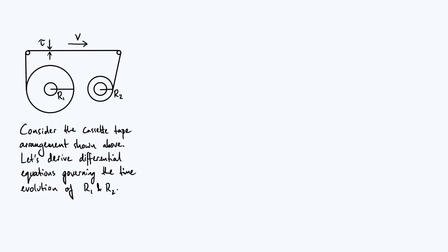Other than R1 and R2, the only parameters that are going to appear in our final differential equations are the thickness of the tape, τ, and the velocity of the tape, v, which I've also marked onto the diagram.